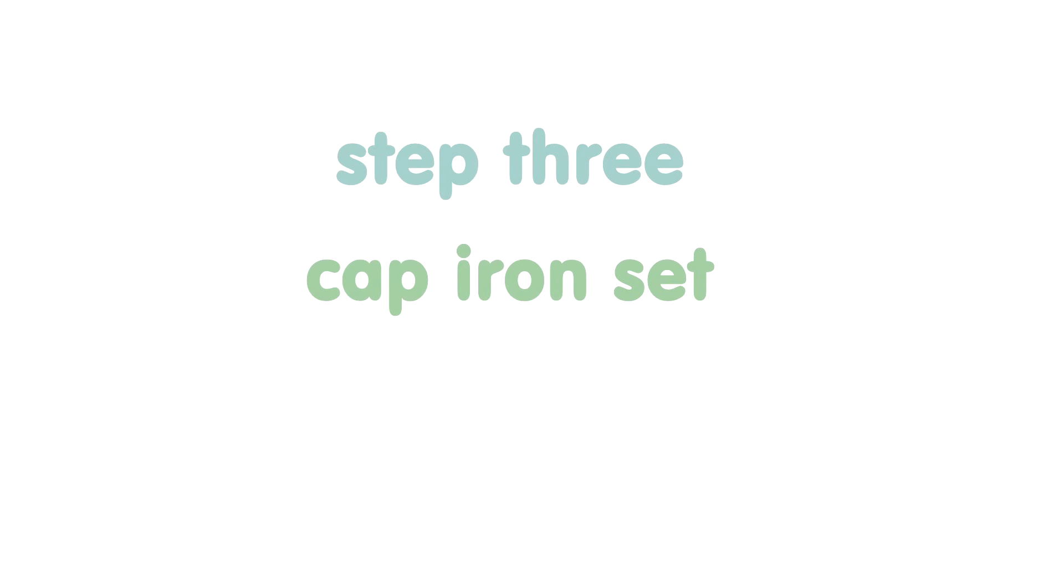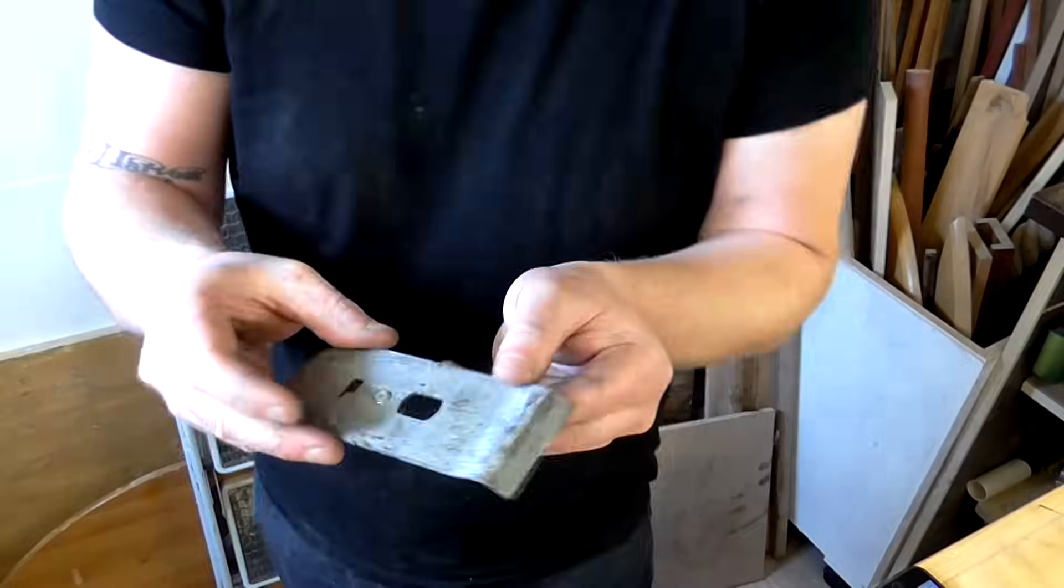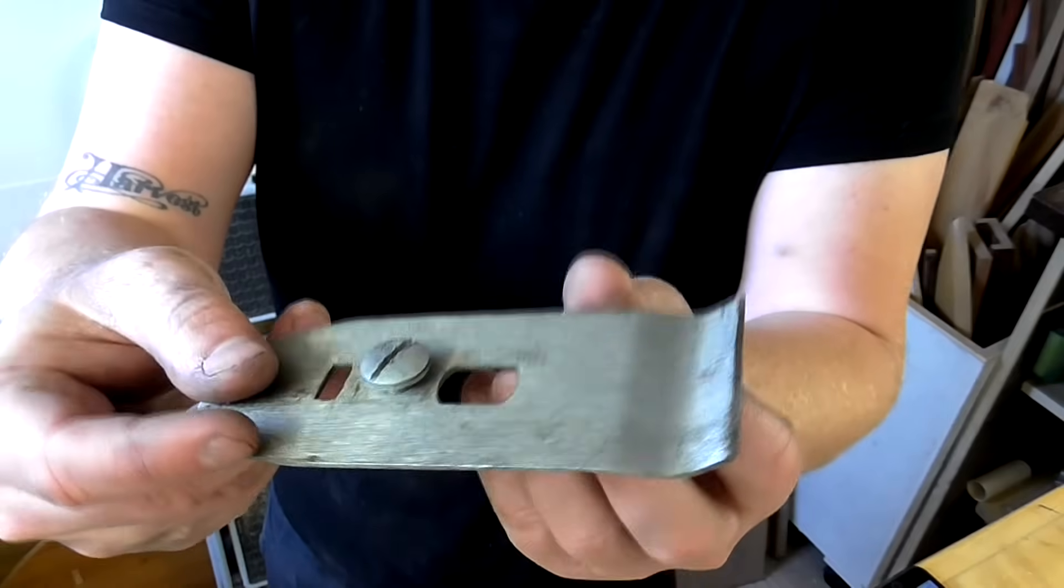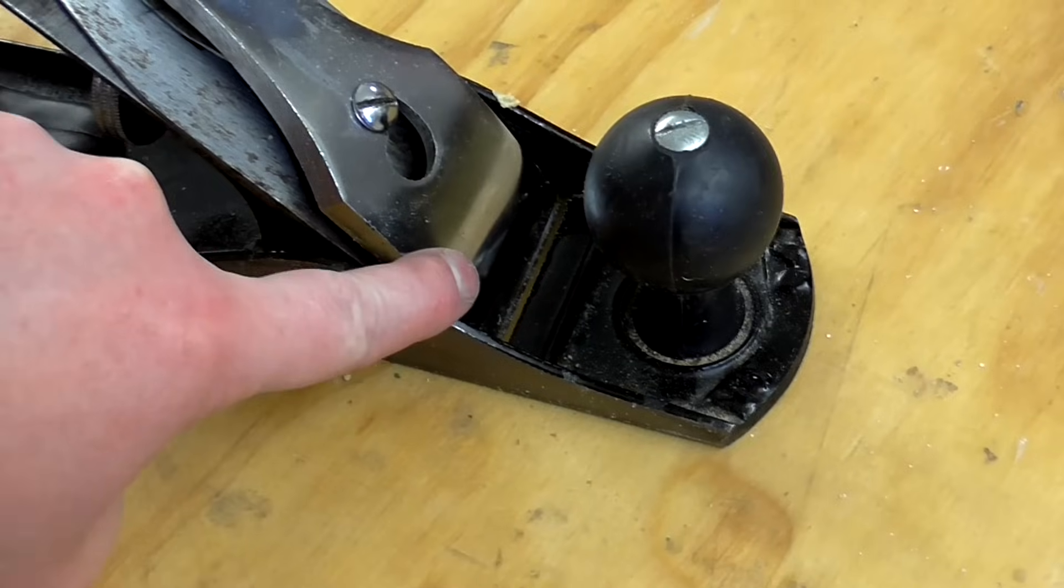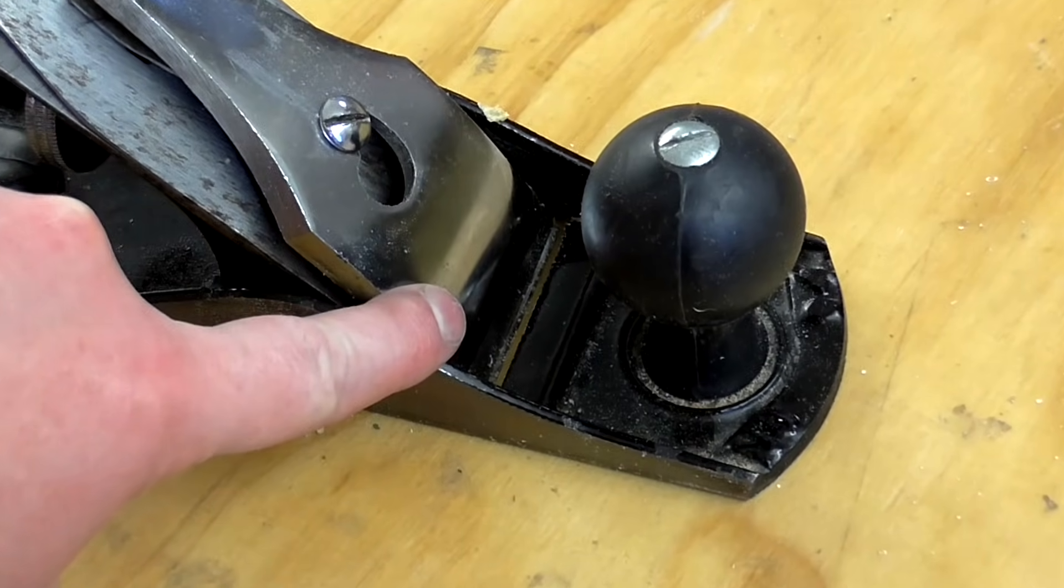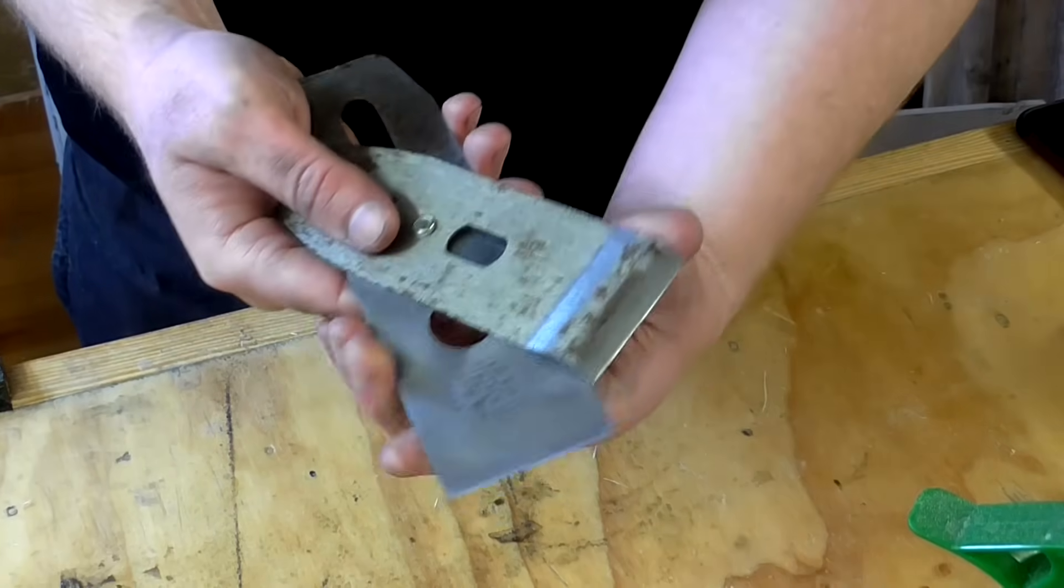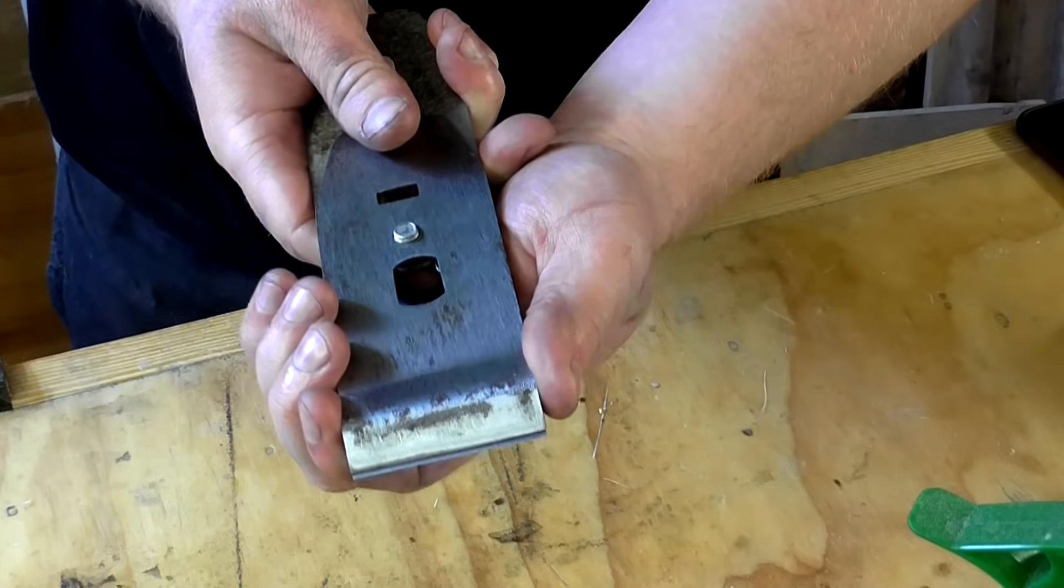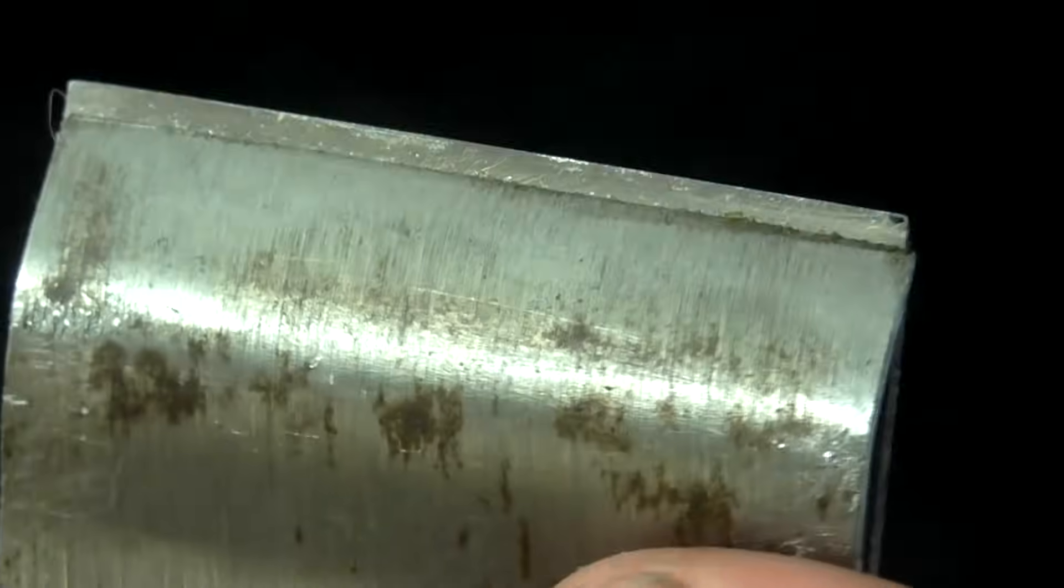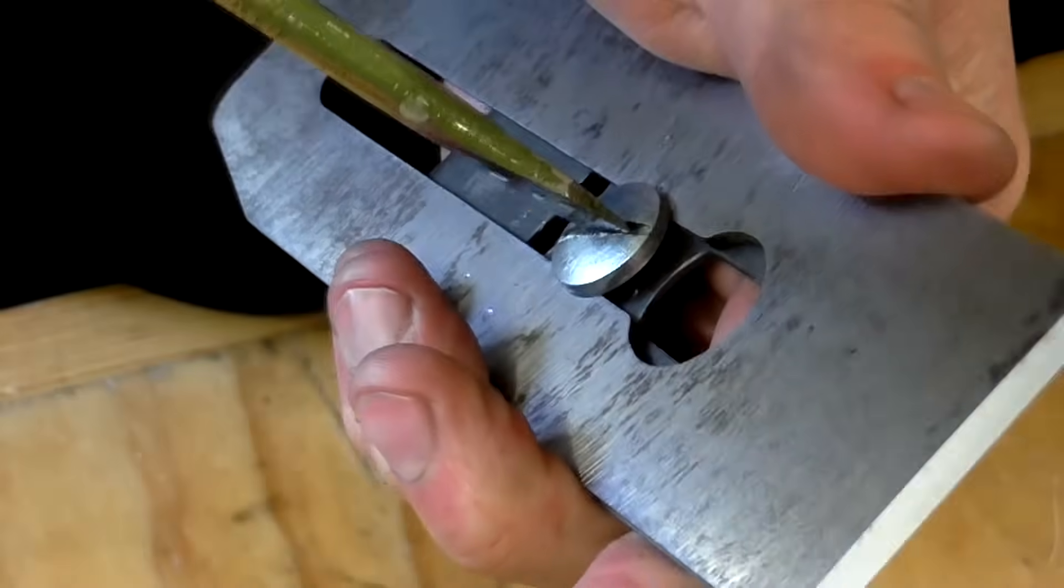Cap iron set. Once your cutting iron is nice and sharp you'll want to reattach it to the cap iron, also known as chip breaker, which is this piece here. Its job is to deflect the shavings out through the top of the plane and reduce tear out. Loosen the screw to adjust it and maneuver it into place being careful not to let it rub against the tip of the cutting iron as that will dull the blade. I like to set mine 2mm away from the tip of the cutting iron. Then tighten the screw to set it.